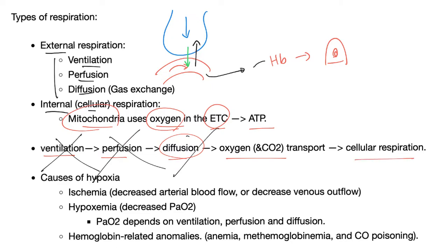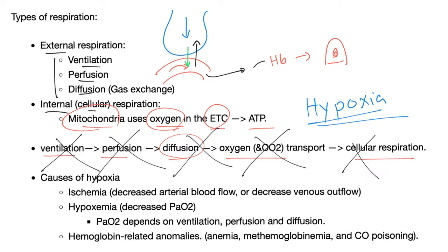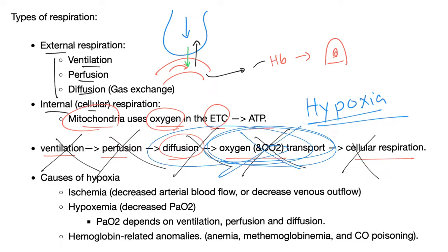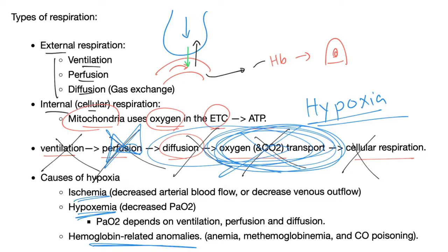Any problem with any of these steps leads to hypoxia — no oxygen going to your tissue. Causes of hypoxia include ischemia, problems with oxygen transport or perfusion, hypoxemia (less oxygen in the blood), and hemoglobin-related anomalies. Don't forget these three concepts: ventilation, perfusion, and diffusion.